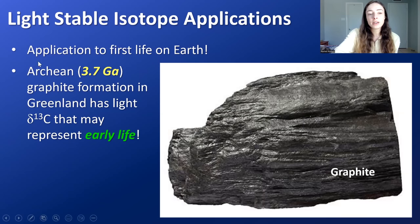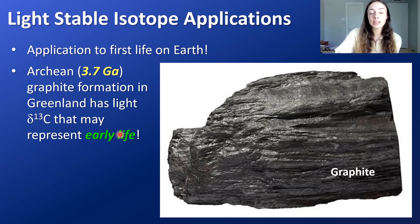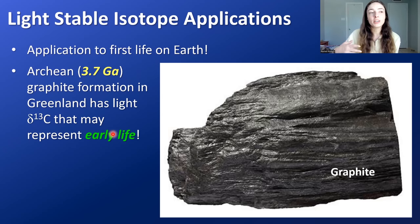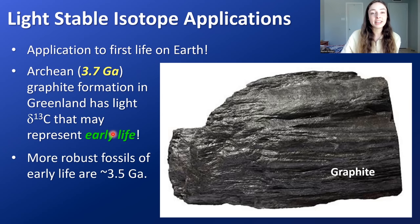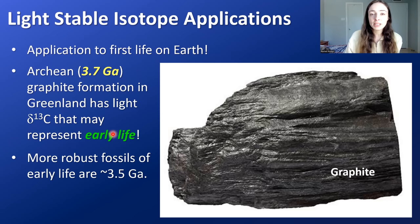For example, an Archean-aged graphite formation around 3.7 billion years old contains light carbon isotope signatures that may represent early life, since phototrophic organisms preferentially take up light carbon. However, this evidence is somewhat uncertain — our more robust fossils indicating life are around 3.5 billion years old, which remains the consensus, though some evidence now points to 3.9 billion years.